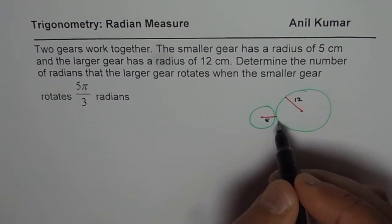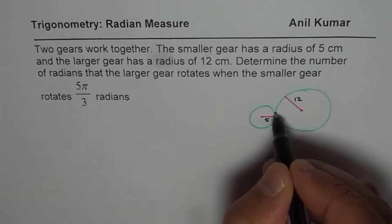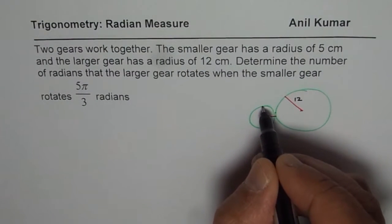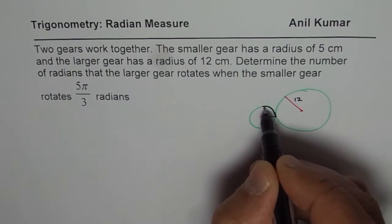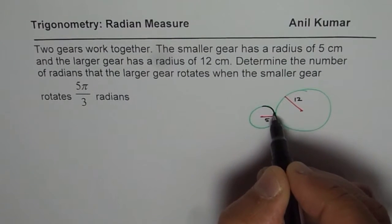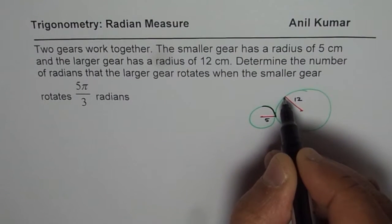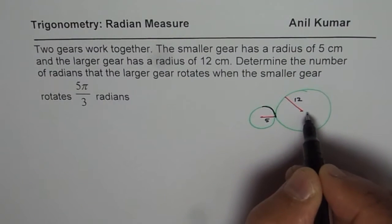Well, the important thing here is that since these are gears, then the arc length will be kind of same. So if that is the arc length for the smaller gear, then A will also be the arc length for the bigger gear.